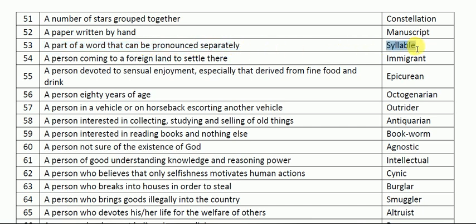Next one: a part of a word that can be pronounced separately is called a syllable. When we pronounce a word by parting it separately, each part is called a syllable. For example, 'syl-la-ble' — that is a syllable.